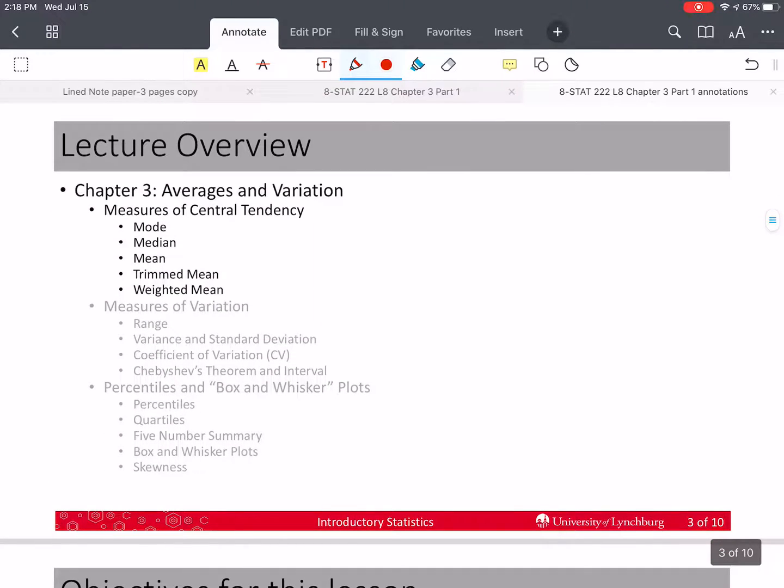In this chapter, we're going to talk about measures of central tendency, measures of variation, and how those adequately define most data sets and distributions. If we have those two measures, then we usually understand enough about our data or distribution to make some decisions. In this video, we're going to discuss measures of central tendency: mode, median, mean, trimmed mean, and the weighted mean.